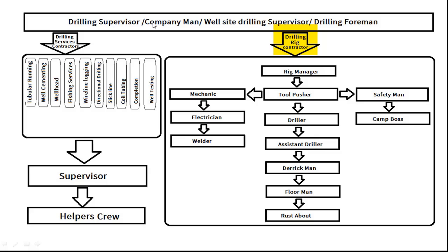The drilling supervisor ensures full compliance with operator company policies. Under the drilling supervisor there will be the drilling rig contractor and drilling services contractors. In the drilling rig contractor, the top most rank for the rig can be rig manager. Under rig manager there is tool pusher, and then there is driller. Under driller there will be assistant driller, direct man, and floor man. The bottom most rank will be the rest above.